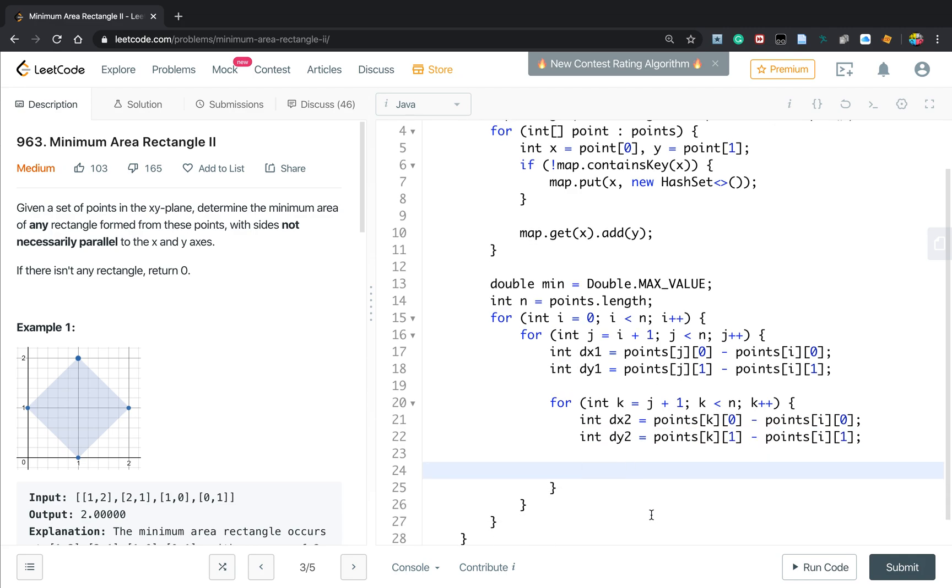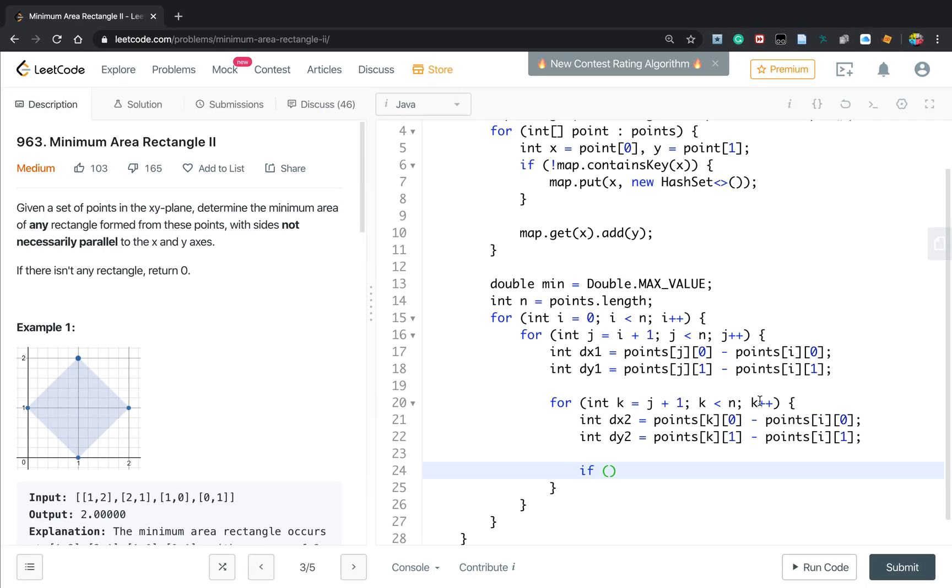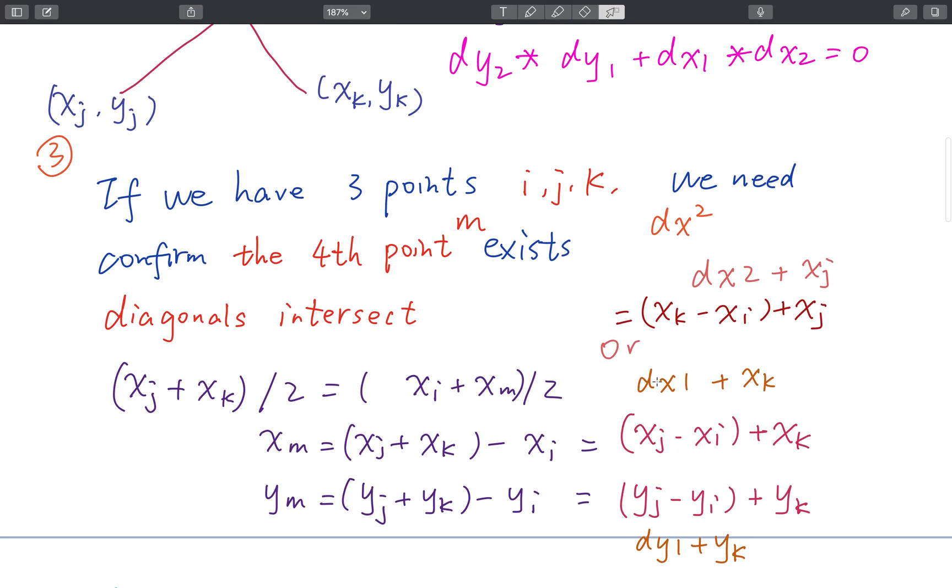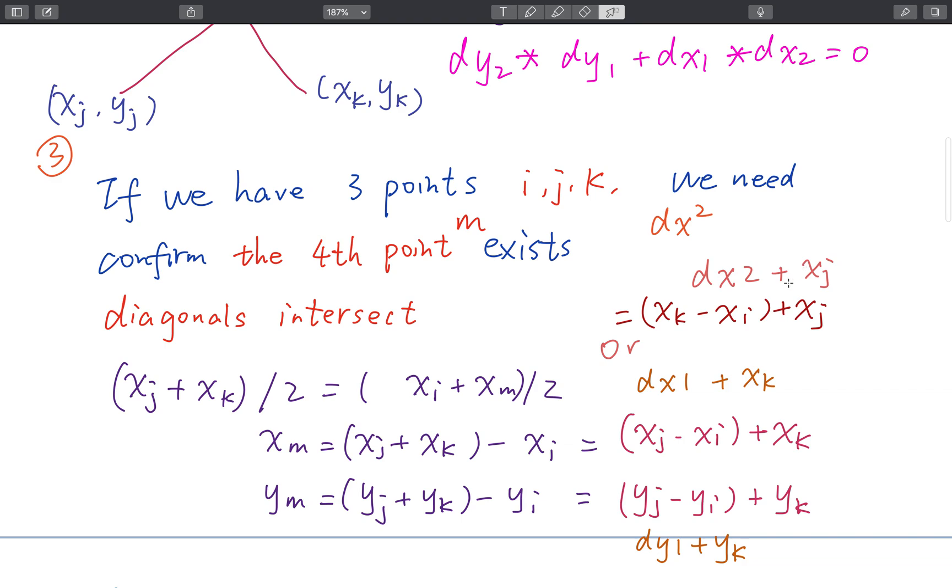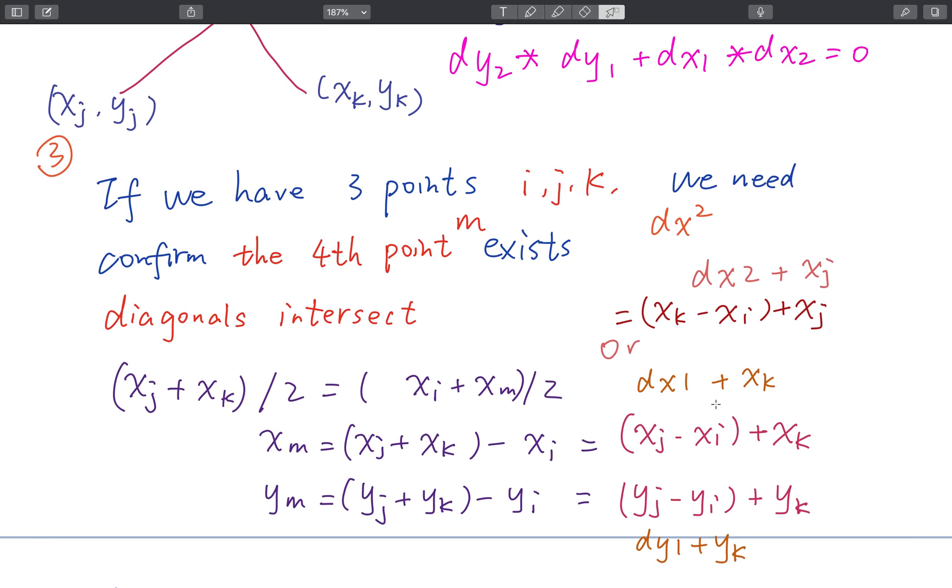We check whether they can form a 90 degree. So if dx1 times dx2 plus dy1 times dy2 not equal to 0, we just continue. Otherwise, they can form a 90 degree. We try to find a fourth point, which will equal to - we can use either of these two representations, we can use just this one.